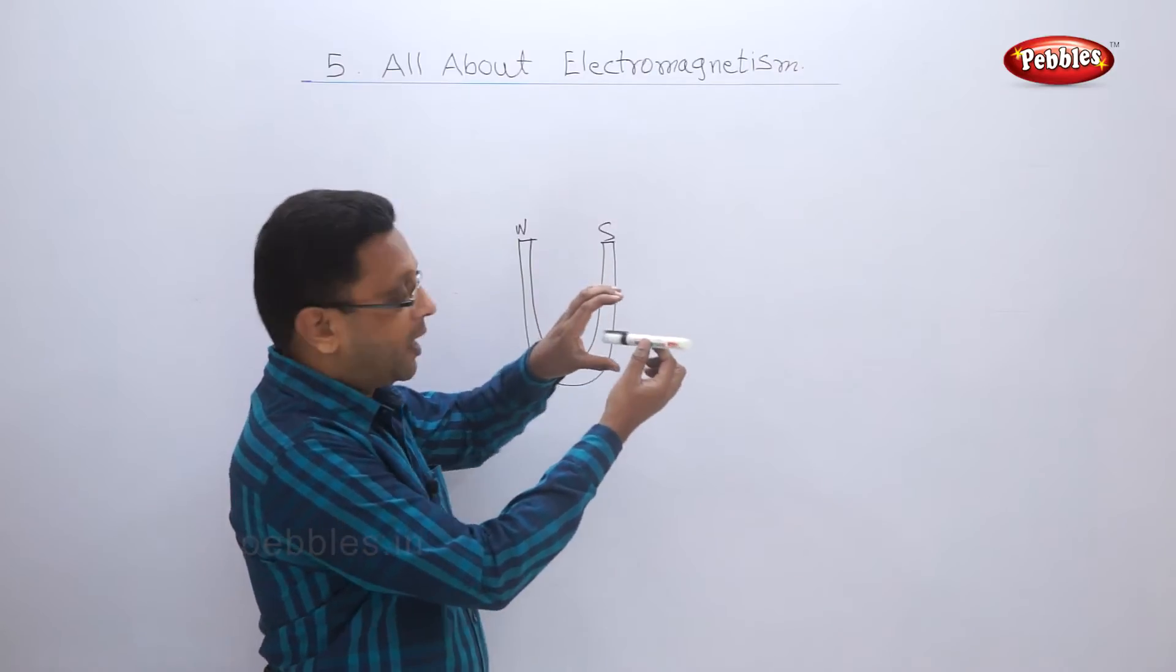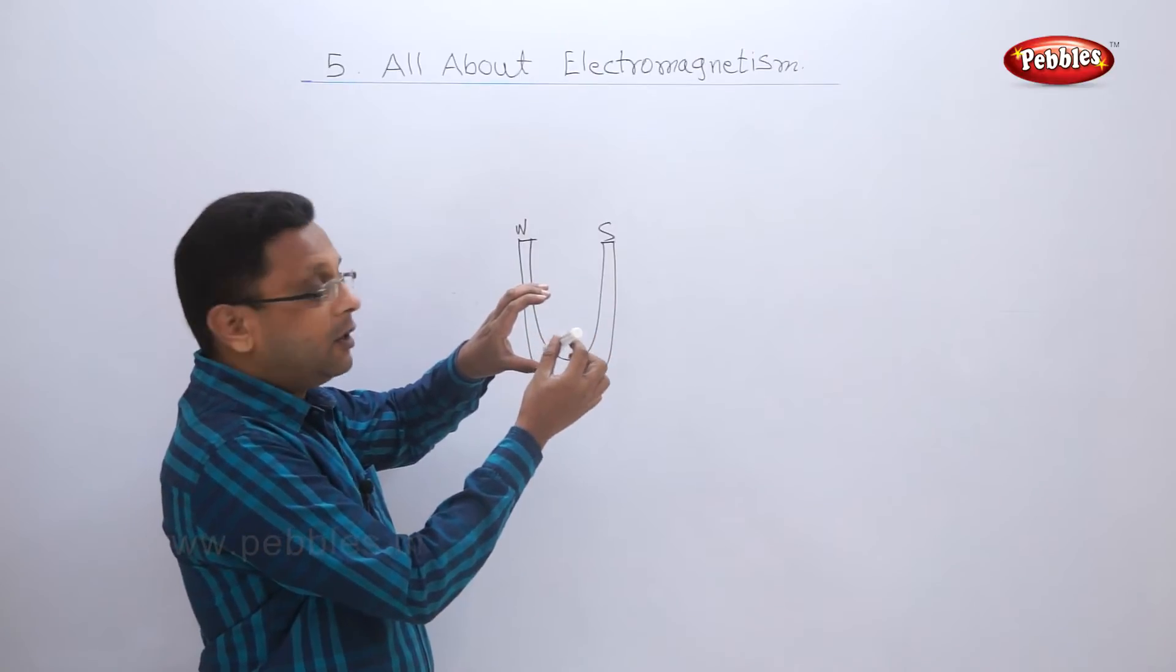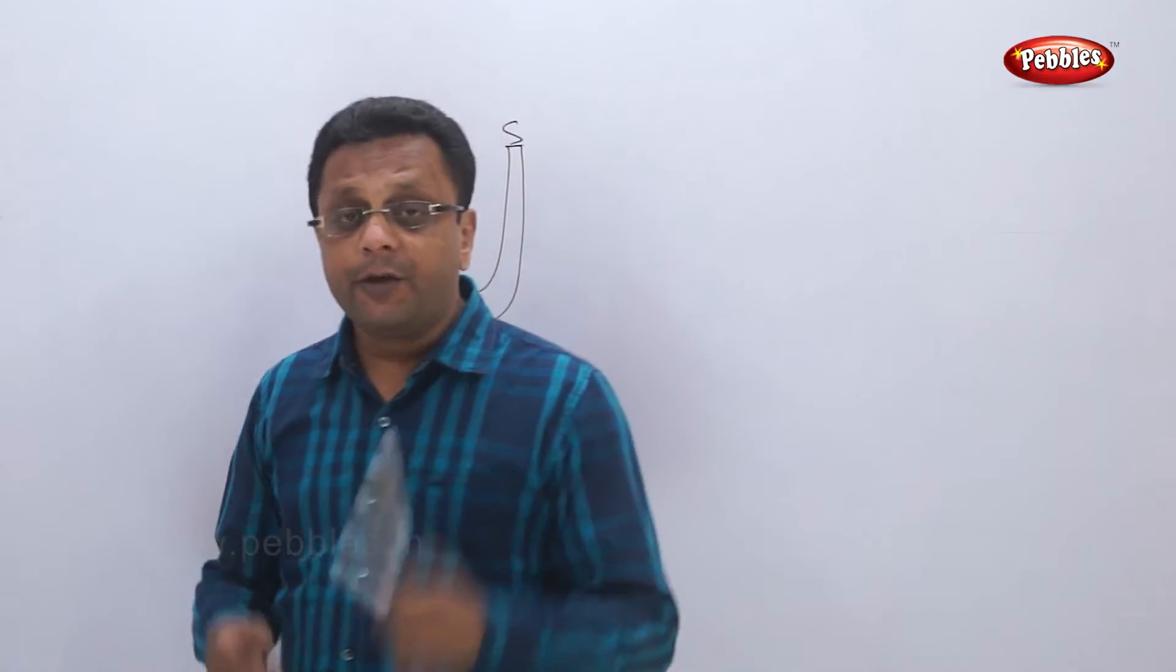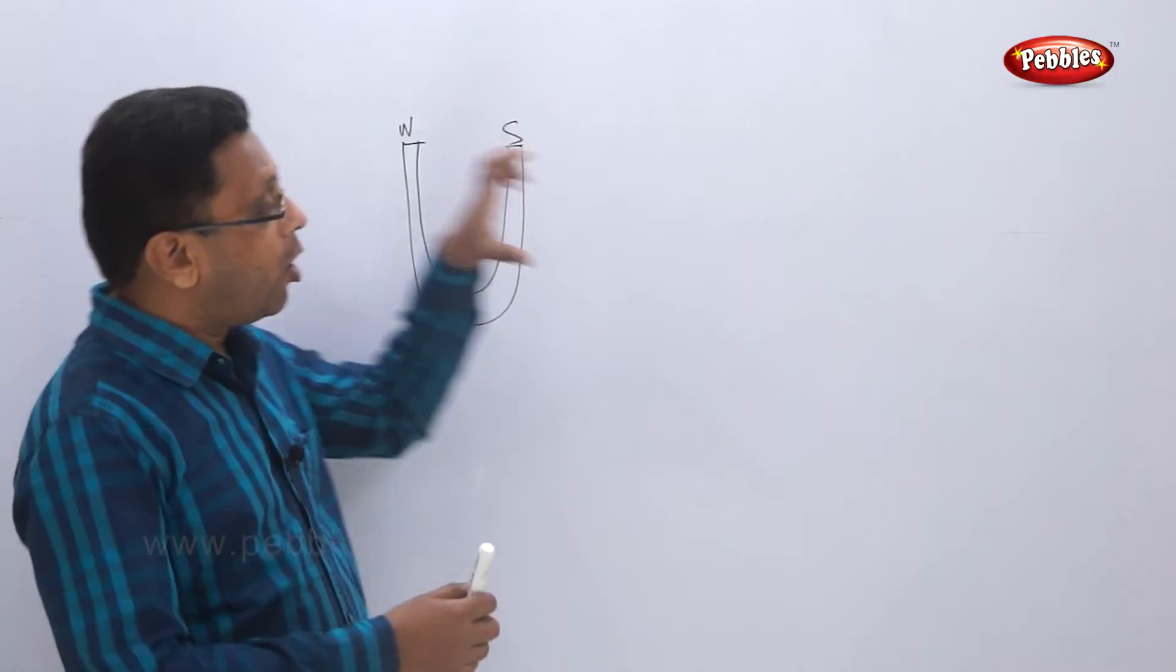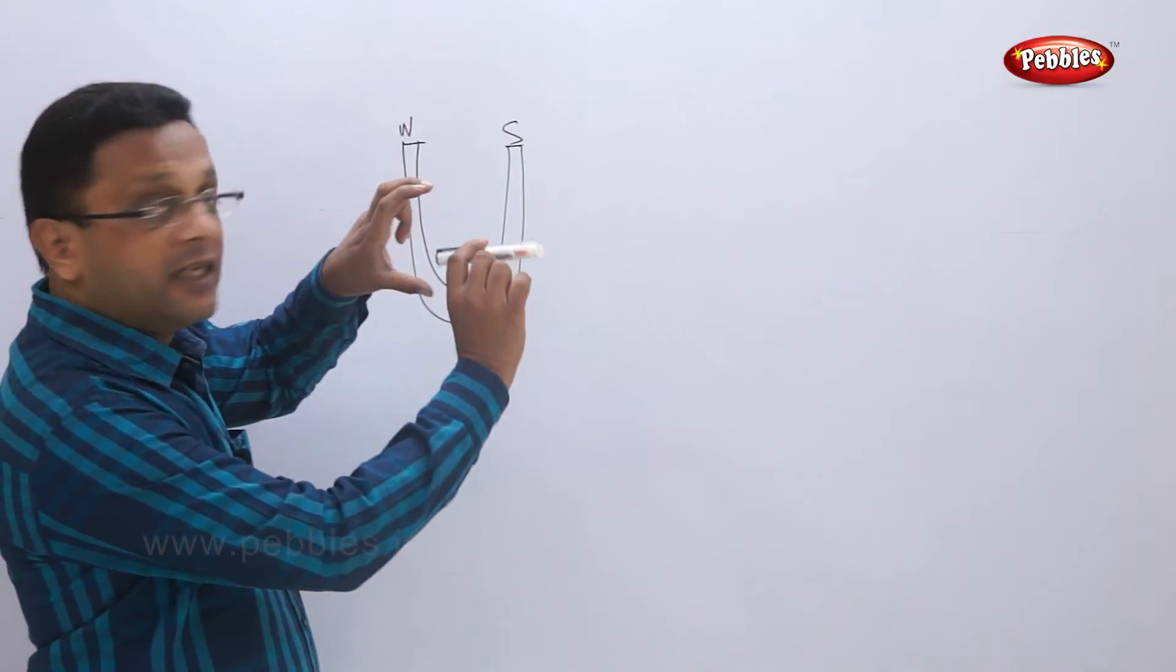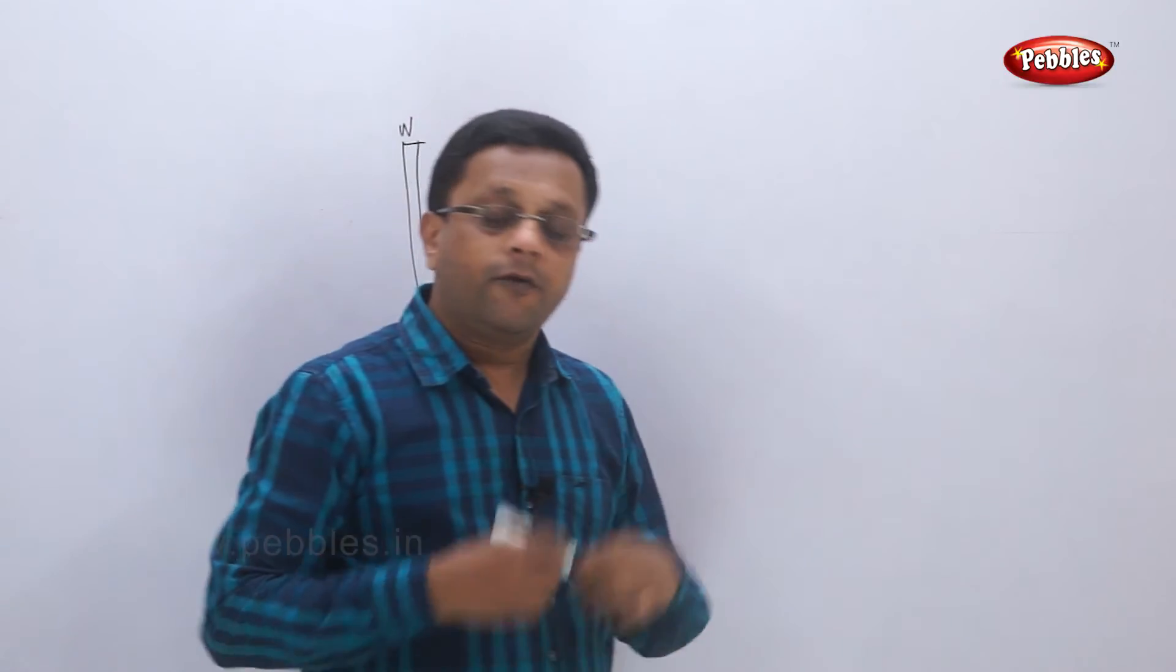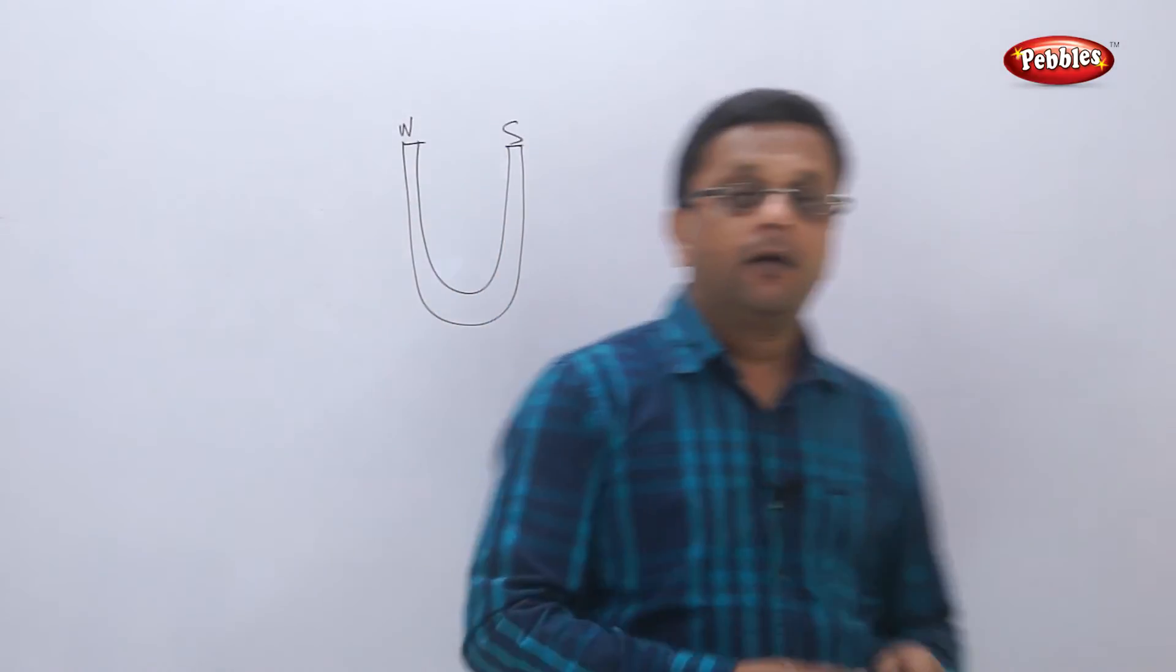It is free to move like this. What will happen? As soon as the current starts, this will get deflected. This induced magnetism is exerting some force on this magnet, and because this magnet is fixed, this rod will deflect.